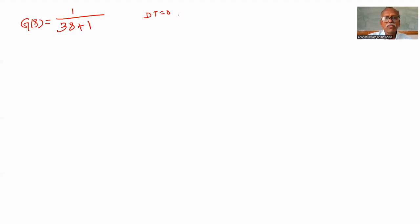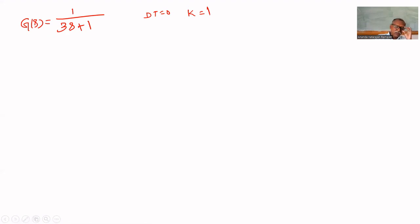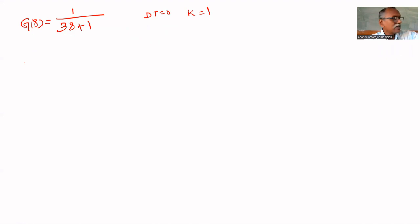Since dead time equals 0, k equals 1, because k equals dead time plus 1. Now we have to find HGP(z).